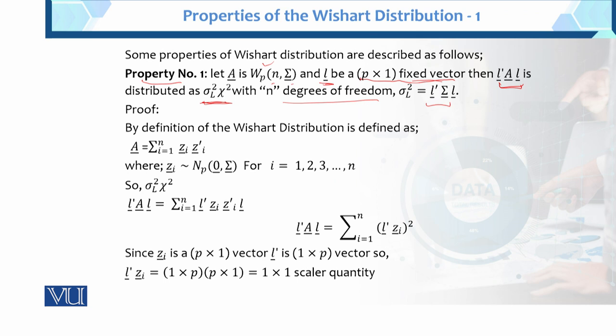Let's prove it. By definition, the Wishart distribution is defined as A equals this, where Z follows a standard normal distribution with mean vector 0 and variance-covariance matrix sigma. So L'AL equals the sum, with L' applied to A, where A equals the sum of Zi Zi', giving us L' A summed as L' Zi, Zi' into L.